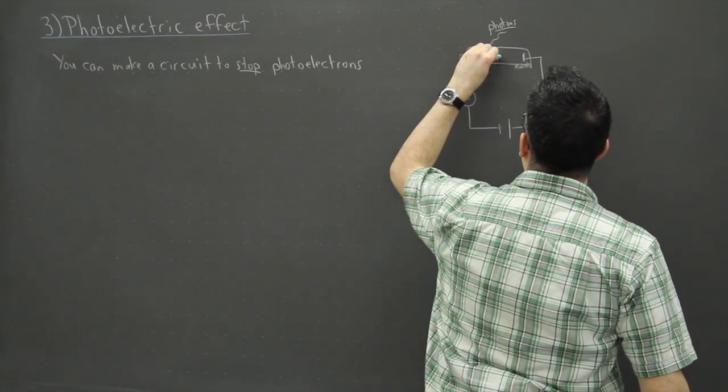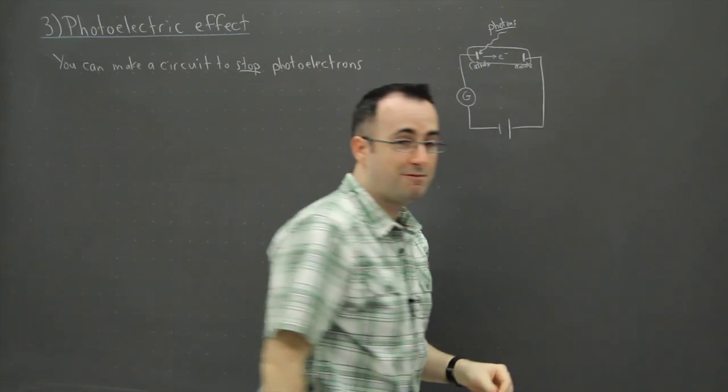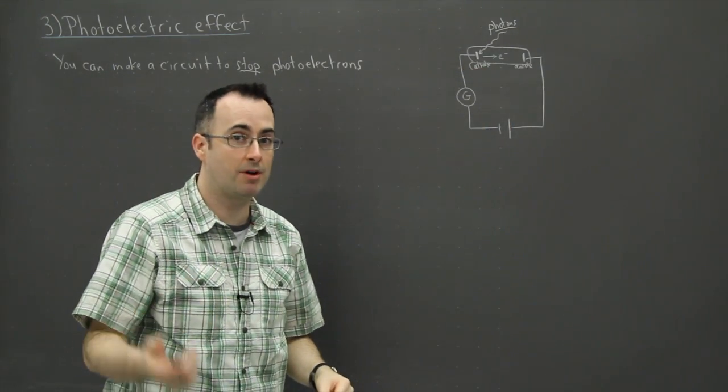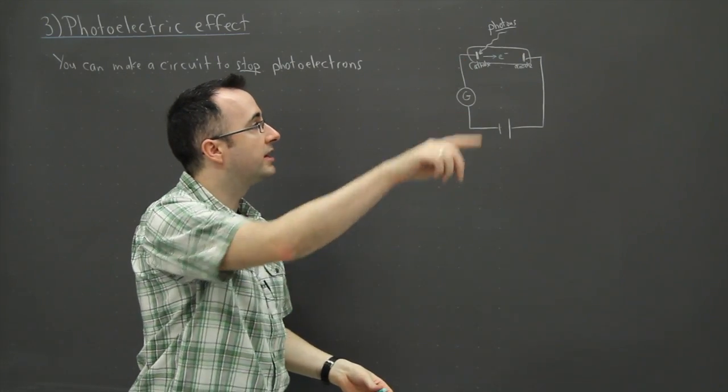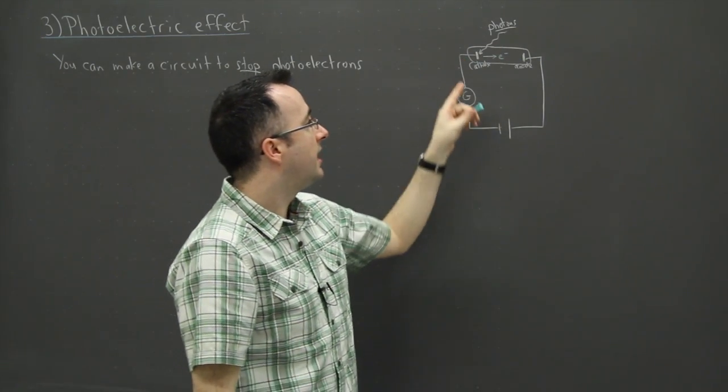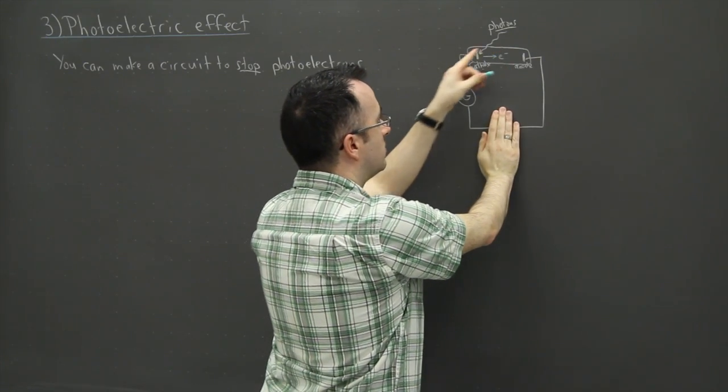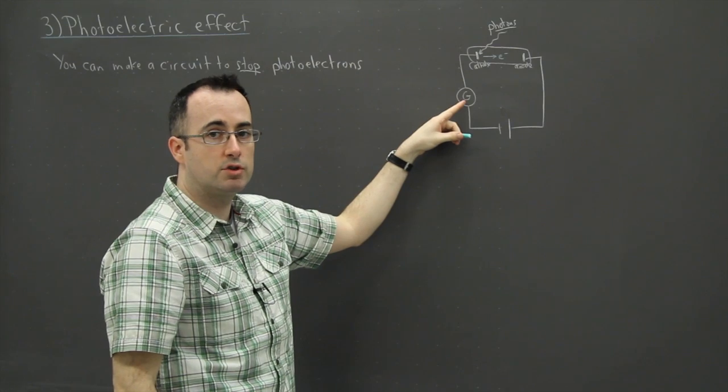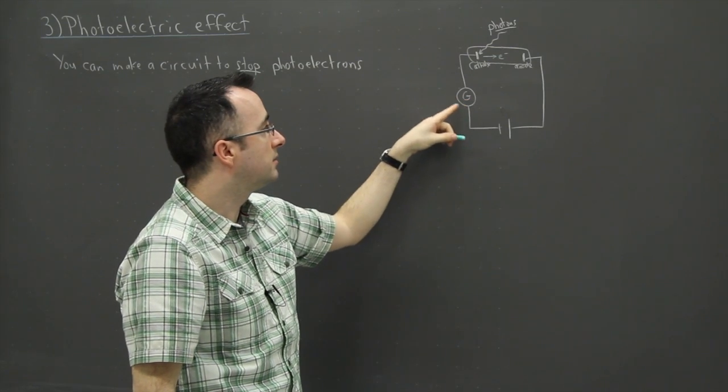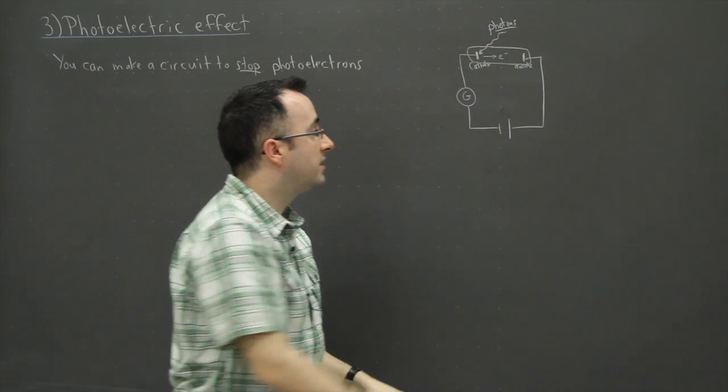So if the photons have enough energy in order to overcome the work function then it can kick out some of these what we call photoelectrons. See why we call them photoelectrons? Because they're electrons kicked out by photons. So they go across and as it stands right now I wouldn't even need this right here, but as it just goes like this I might actually be able to detect some sort of current in the system.